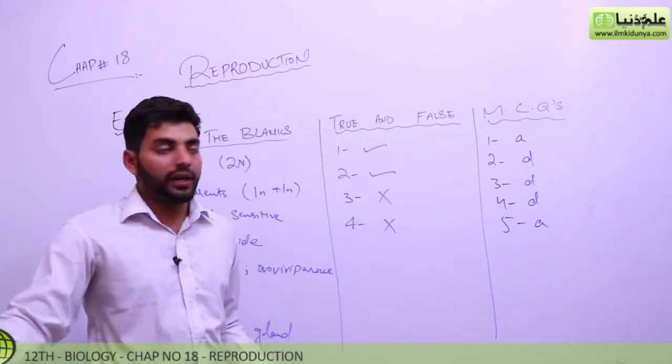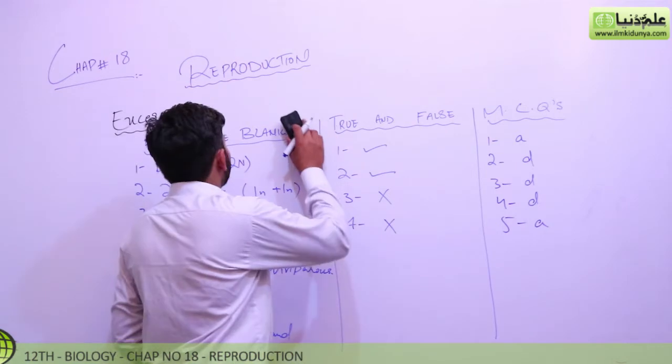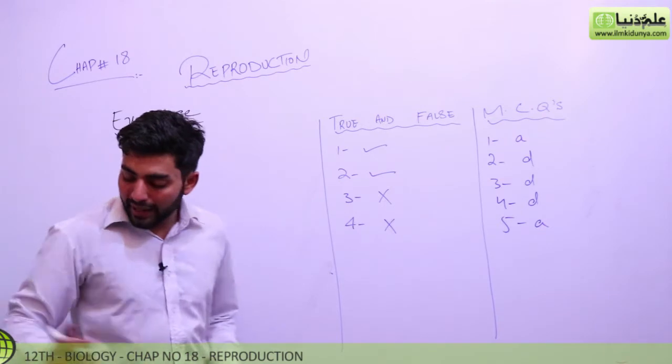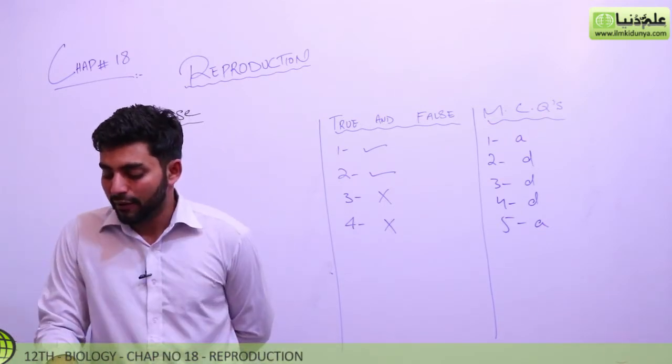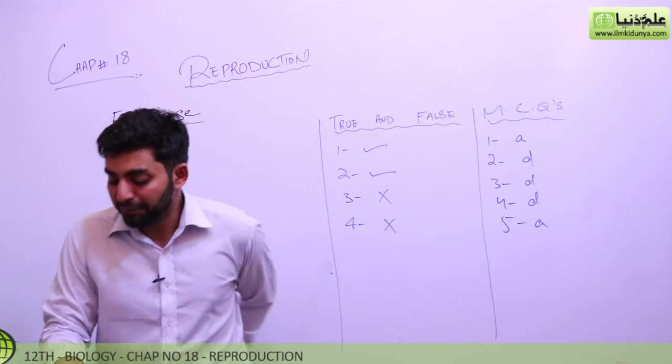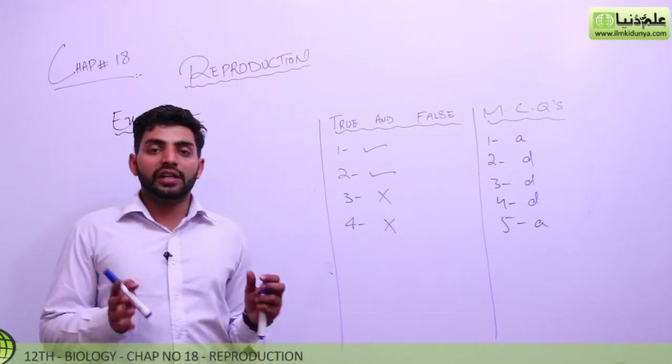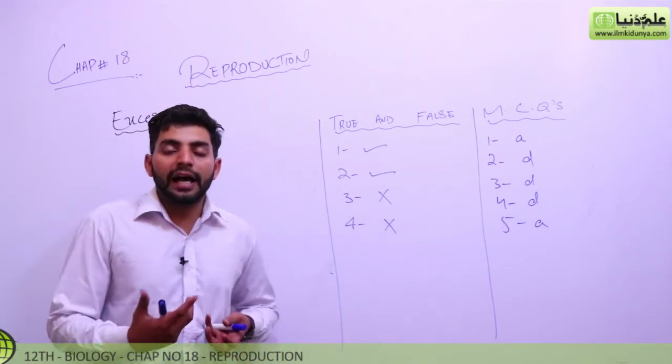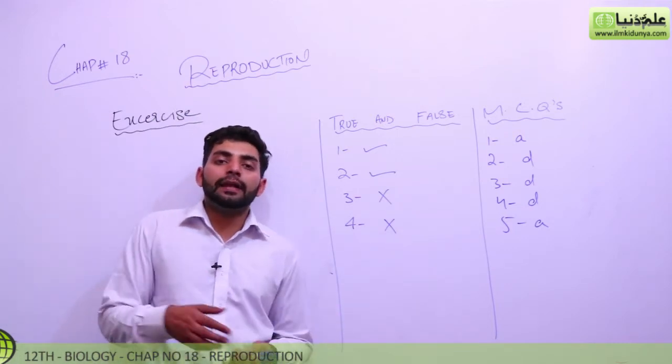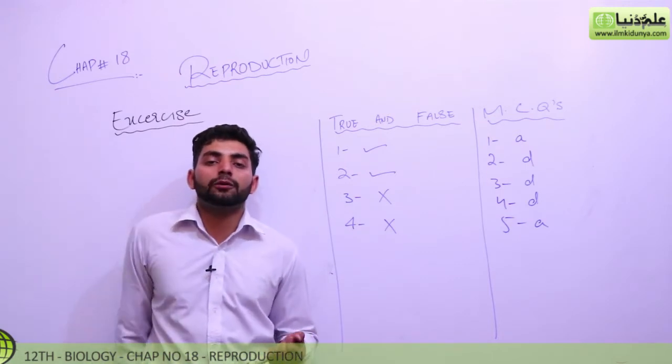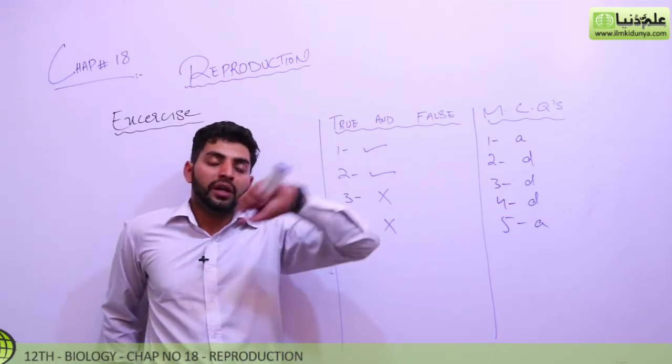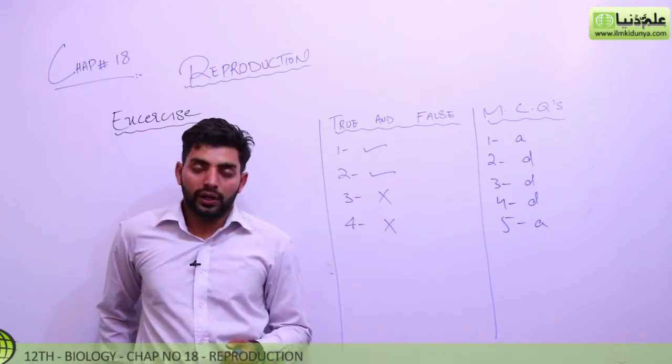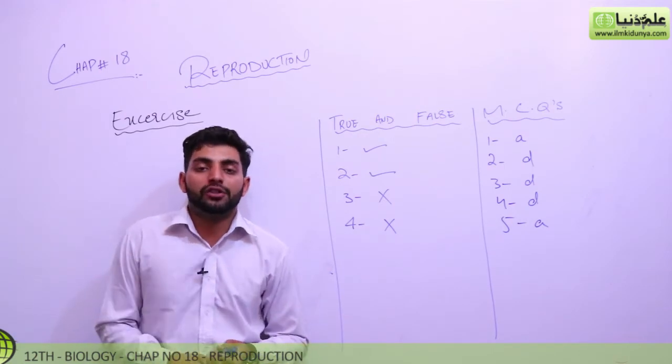After this, we will come to short questions. The first question he asked, what changes occur in ovulation and menstruation during pregnancy? During pregnancy, the ovulation also stops and the menstrual cycle also stops. The reason is that the placenta is developed and in the placenta, all the hormones are secreted. Therefore, there is no ovulation or menstrual cycle.